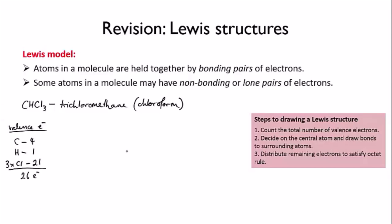Then we decide on the central atom. Carbon forms four bonds and hydrogen and chlorine usually form only one bond each, so carbon should be in the middle.